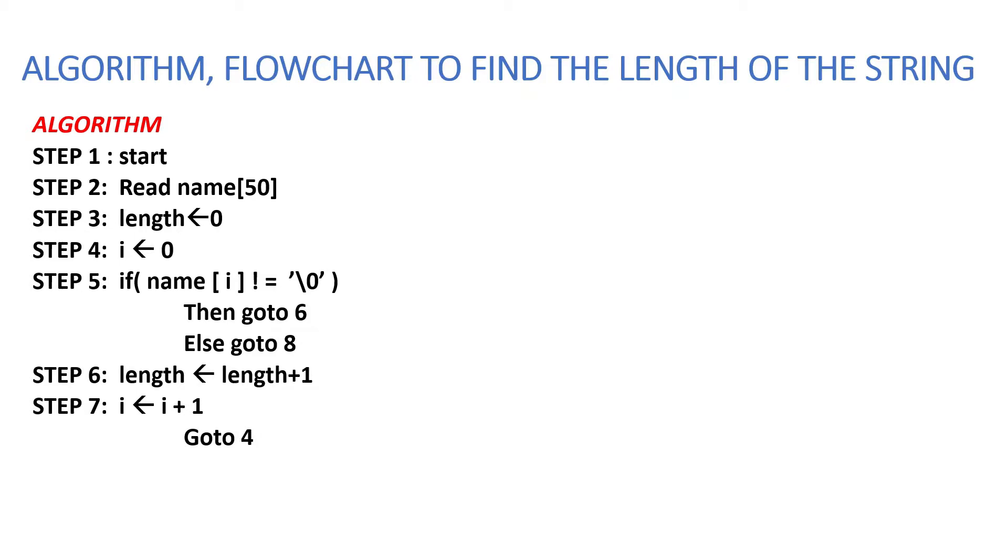It checks the condition until the condition fails. Once the condition fails, it moves to step 8 and prints the length of the string and then stops.